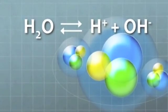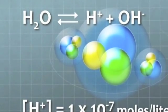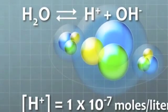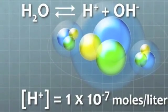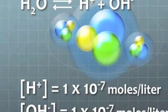To a very small extent, liquid water, or H2O, breaks down to form H-plus and OH-minus. A liter of water contains about 1 times 10 to the minus 7th moles of H-plus, and the same amount of OH-minus.